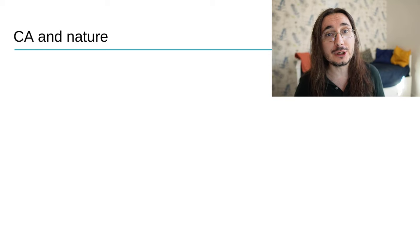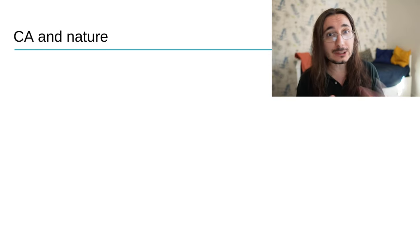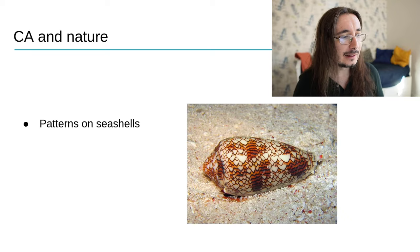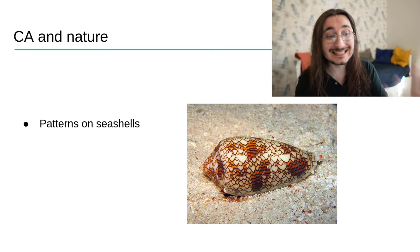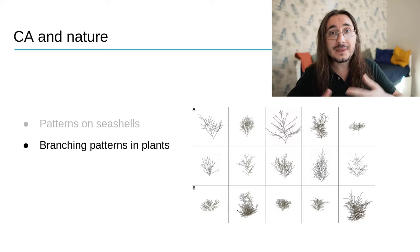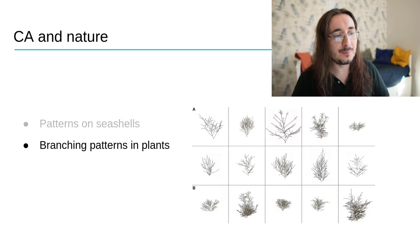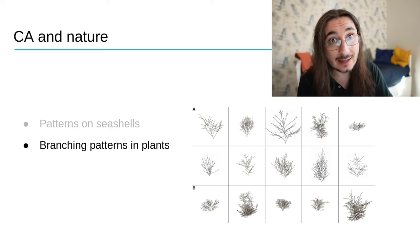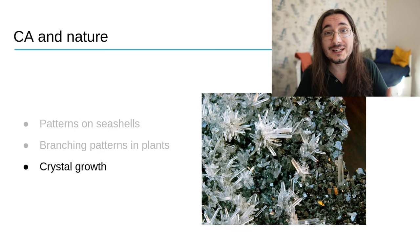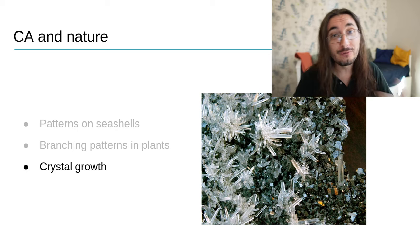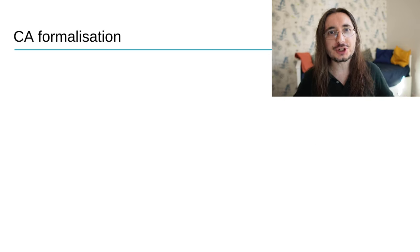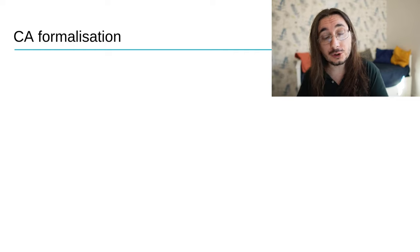Cellular automata are really good at simulating some natural events and phenomena. Like for example, the patterns you can find on seashells, or the branching mechanism that you can find in plants and trees, or even the way crystals grow over time. Now that you have a good high level intuition about cellular automata, let's move on to formalization.